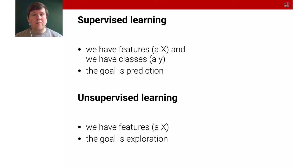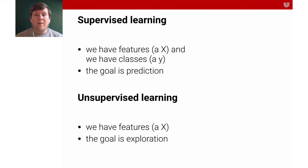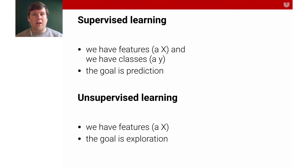There are two big streams in machine learning. With supervised learning, we have features — our X — and we have classes, a Y that we're trying to predict. The goal is prediction: we have pixel values about different animals, labels saying this is a dog or a cat, and then the goal is prediction. There's also unsupervised learning, covered in the lectures on clustering and dimensionality reduction, where we only have features and the goal is exploration — finding similarities between features.